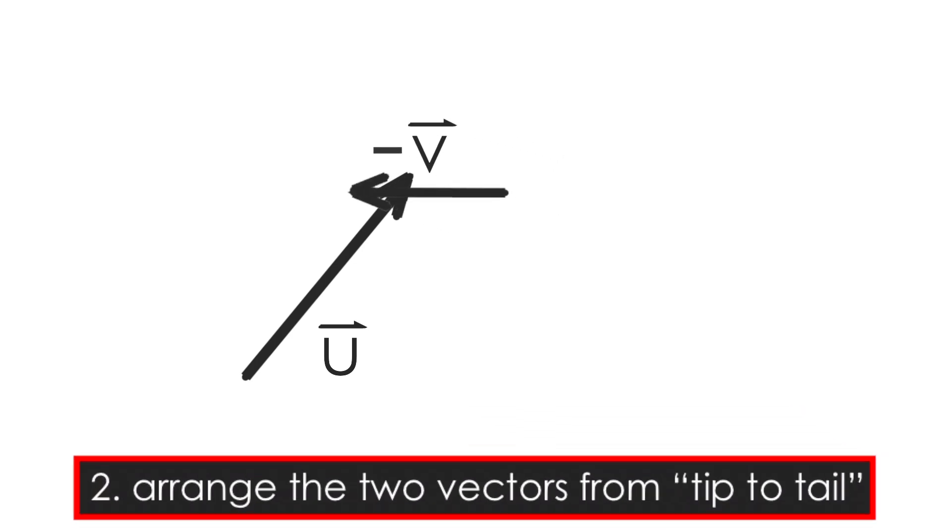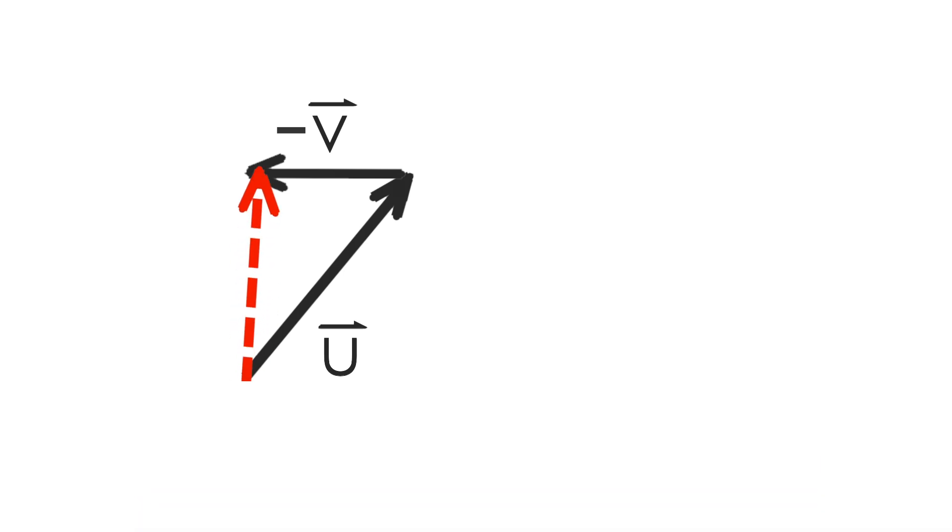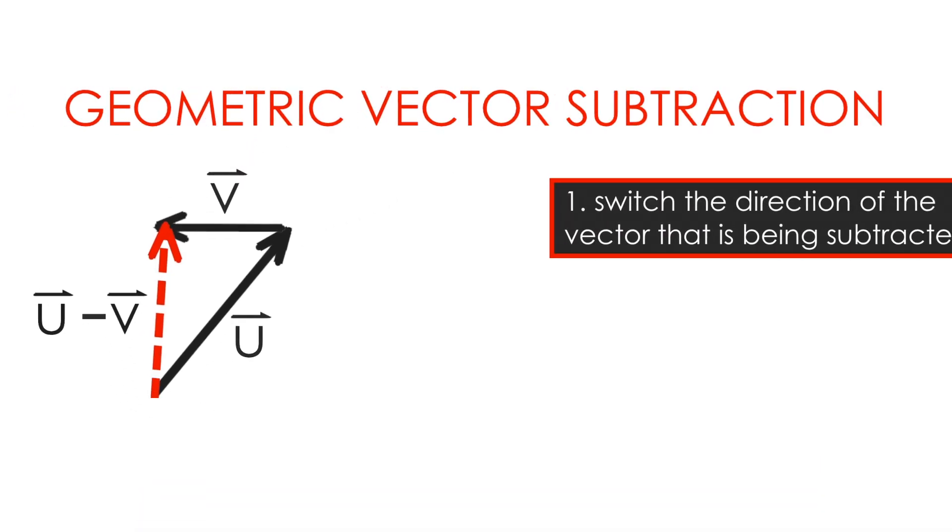We place our vectors tip to tail. We then draw the resultant vector from the tail of the first vector to the tip of the second. And that's really all there is to it.